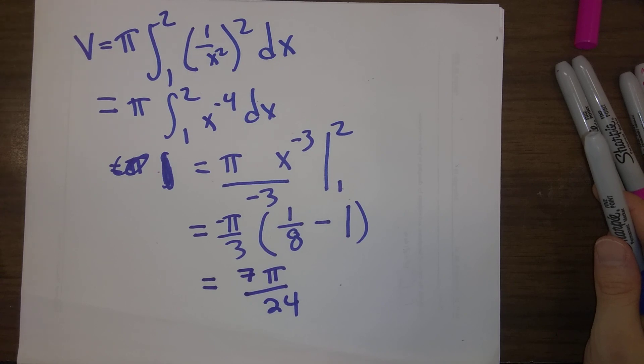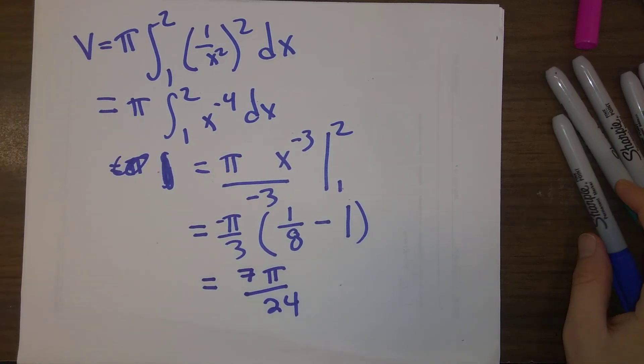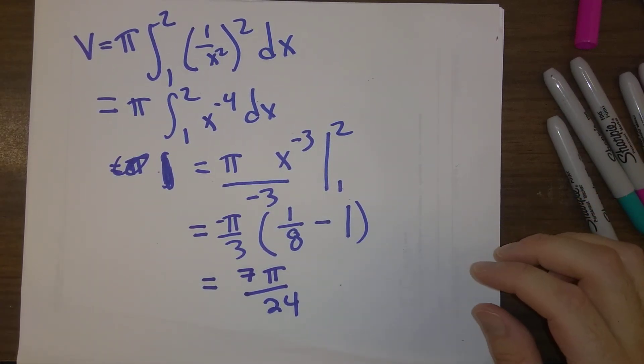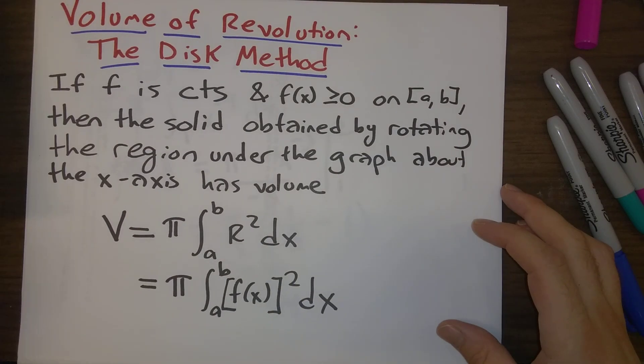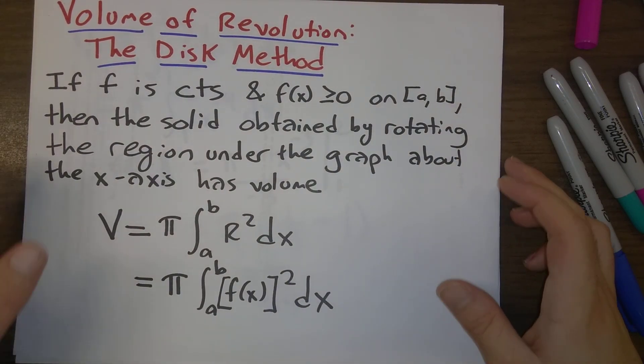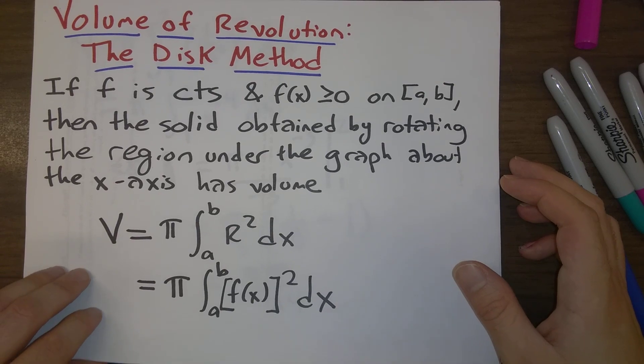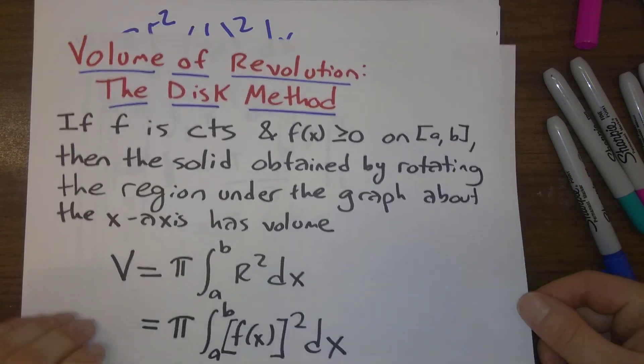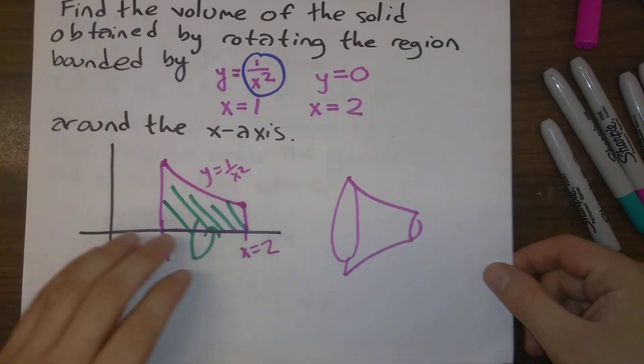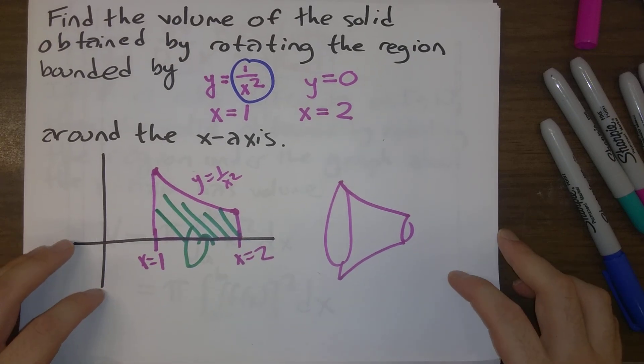So that is the first thing for us to do in this section. Once again, here is the disk method summary. In the next set of videos, we will take a look to see what happens if we change up the bottom along with changing some other things.